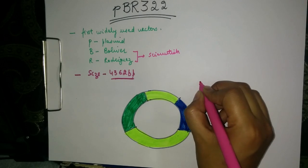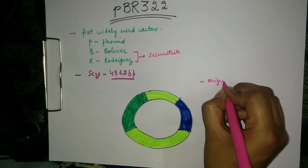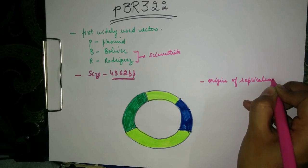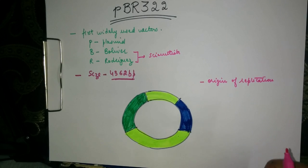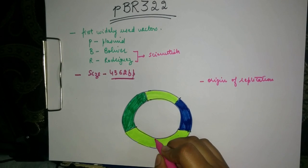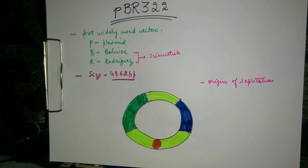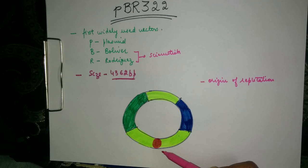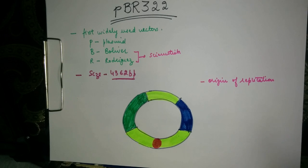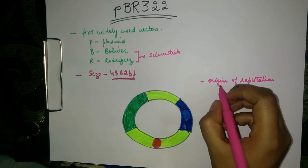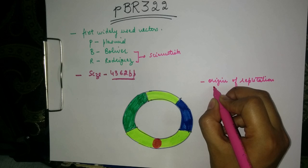First, it contains a single origin of replication for the replication of the plasmid. This origin of replication is essentially required for the replication of the vector inside the host, and the source of this origin of replication is from the E. coli origin.